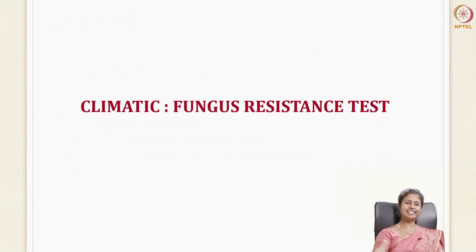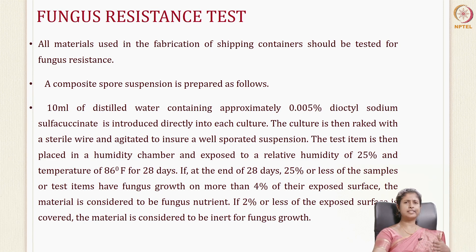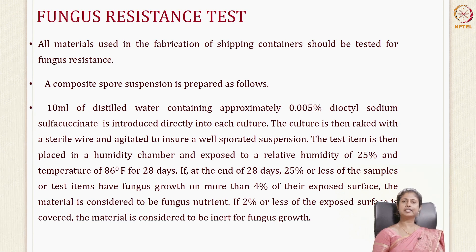The last climatic test is the fungus resistance test. Corrugated fiber boards are natural substances that, when exposed to humidity and particular temperatures, can develop mold or fungus growth. A spore suspension is prepared. If more than 4% of the exposed surface has fungus growth, the material is considered a fungus nutrient and susceptible to fungus growth. But if 2% or less of the exposed surface is covered with fungus, the material is considered fungus resistant or inert to fungus growth.